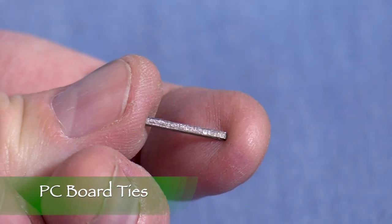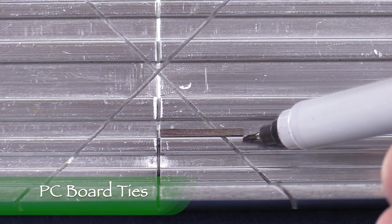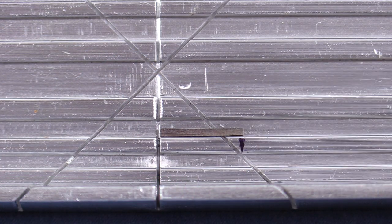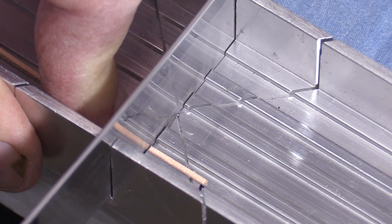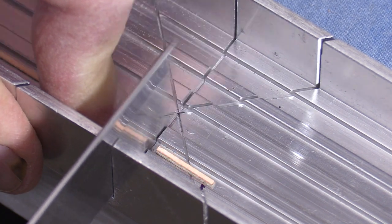This is one of the standard gauge wood ties from Clover House. I'll put it in my small miter box and mark the length with a sharpie. Now I can use that mark to cut ties from the PC board tie strip.